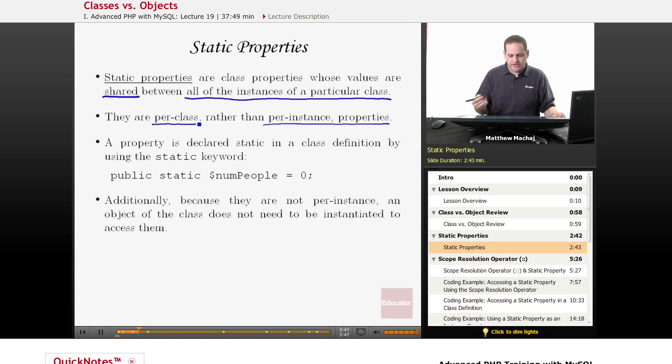The way you declare a static property in a class definition is using the static keyword. So whereas before, we'd just been saying public num people, and that would be our property definition, now we're adding the static keyword, we're saying public static num people, and we're giving it an initial value of zero. So basically what this statement says, we're declaring a public property that's a static property, it's going to be called num people, and its initial value is zero. And this would be contained within a class definition just with all your other properties.